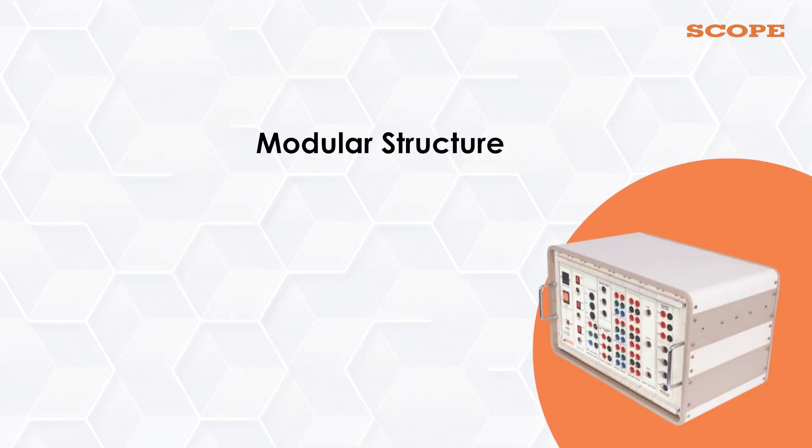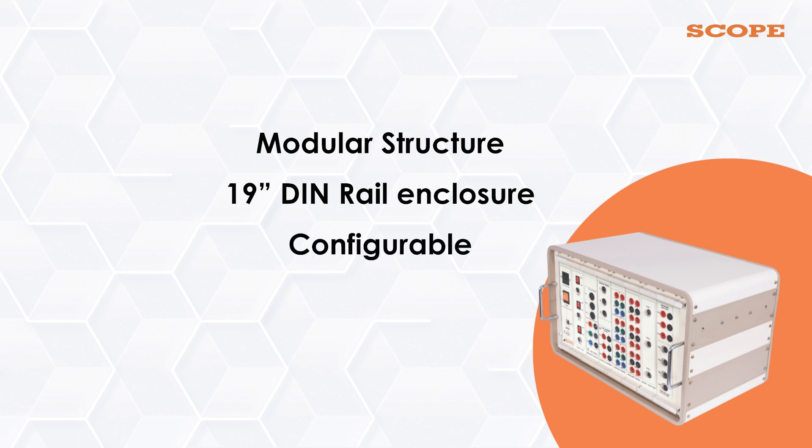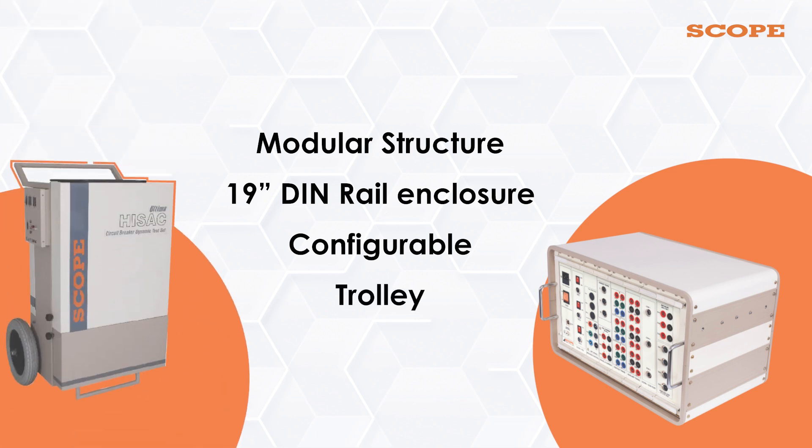HiZac Ultima is designed and manufactured on modular structure and mounted in standard 19-inch DIN rail enclosure, ensuring easy configuration of the product as per customer's requirement. The kit can be mounted on an optional trolley for easy transportation.